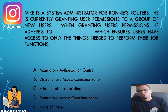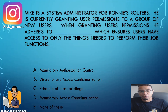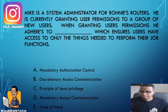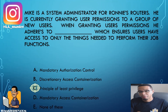Mike is a system administrator for Ronnie's Routers. He is currently granting user permissions to a group of new users. When granting permissions, he adheres to blank, which ensures users have access to only the things needed to perform their job functions. Mike is adhering to the principle of least privilege — you give people the minimum amount of privileges they need to do their job.